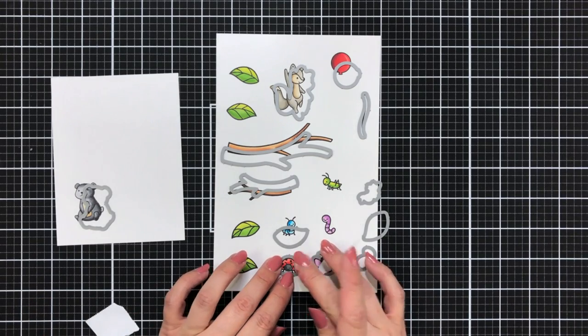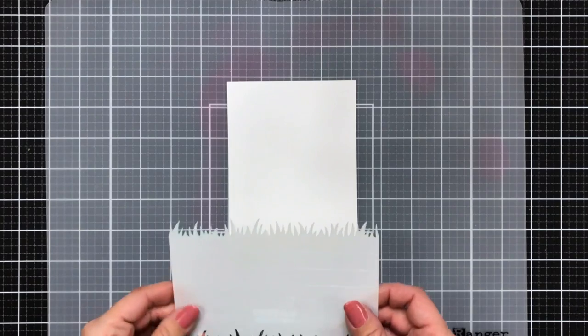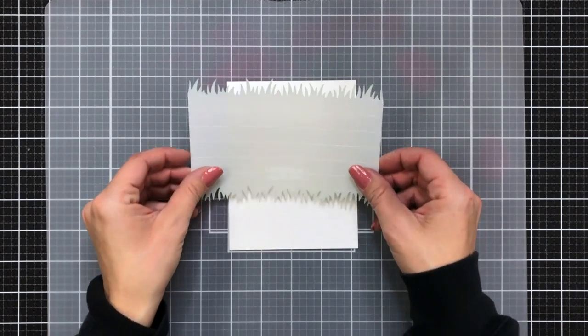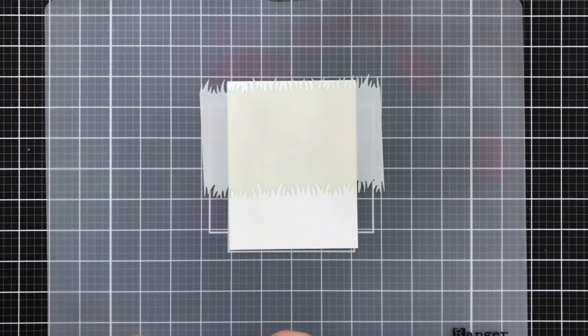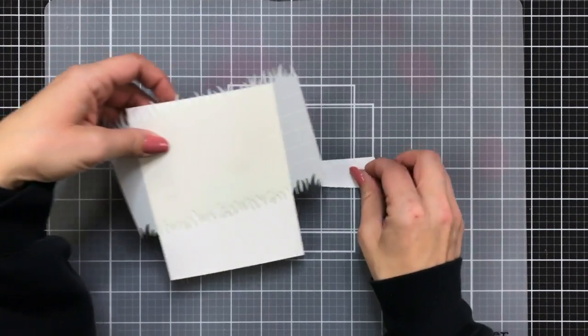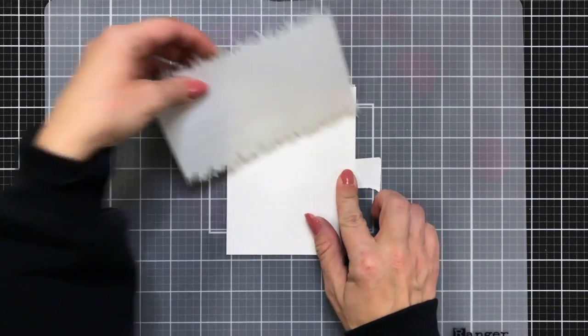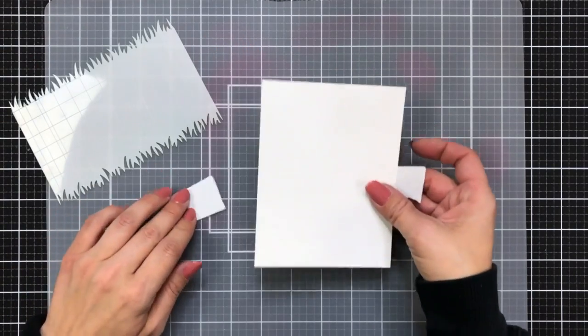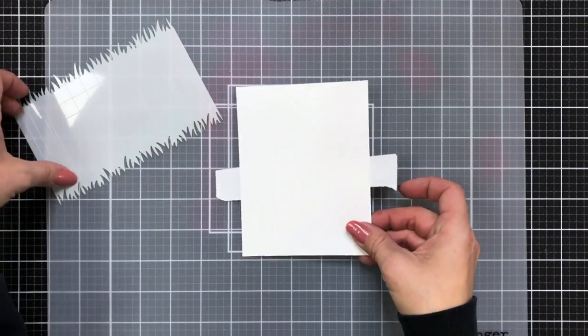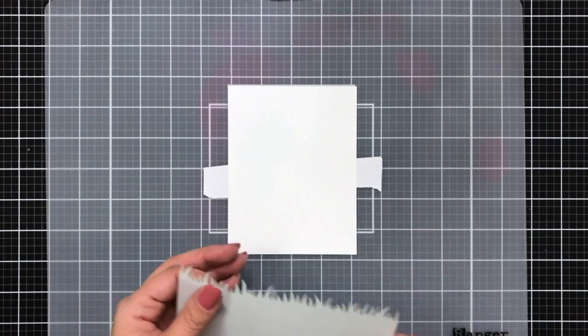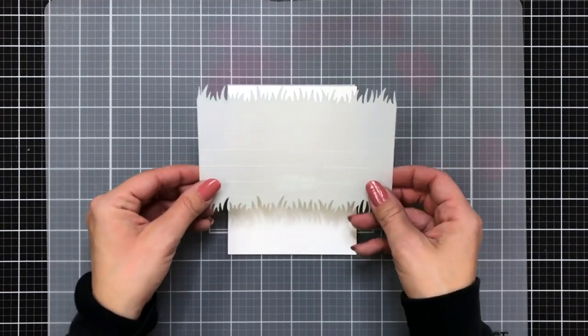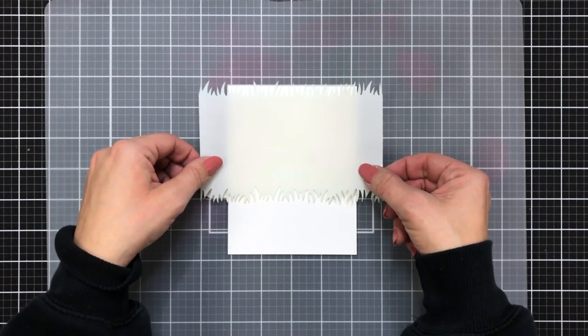So once all that coloring is done I line up those coordinating dies, die cut out my images, and set them off on the side to work on my background. This is the new grassy stencil. I am so super excited that Lawn Fawn came out with stencils. I absolutely love using stencils on my cards. To create my one layer background scene I'm starting off with a piece of white cardstock. This is four and a quarter by five and a half and I added a couple pieces of post-it tape behind it.